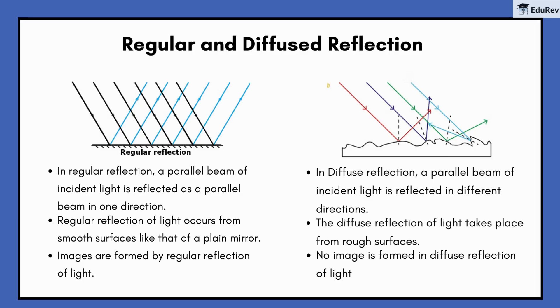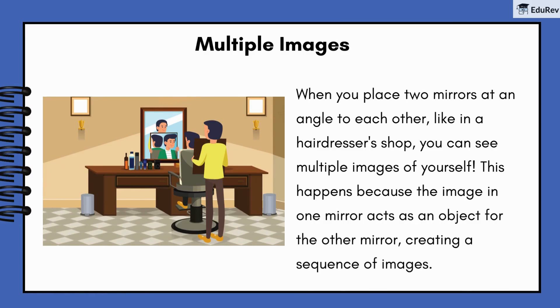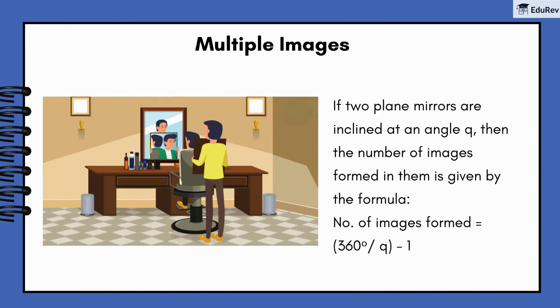Here's something fun. When you place two mirrors at an angle to each other, like in a hairdresser's shop, you can see multiple images of yourself. This happens because the image in one mirror acts as an object for the other mirror, creating a sequence of images. If two plane mirrors are inclined at an angle θ, then the number of images formed is given by the formula: Number of images = (360° / θ) − 1.